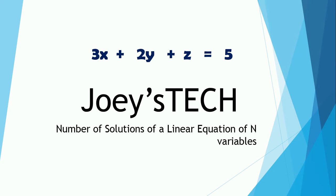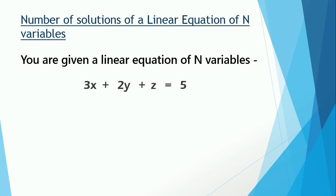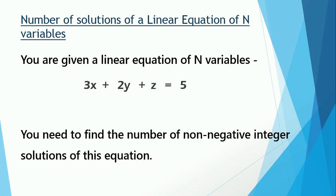Let's apply the dynamic programming technique to the concept of linear equations in mathematics. We are going to find the number of solutions of a linear equation of n variables. The problem statement is simple: you are given a linear equation of n variables — in our case n is 3 — and the right-hand side is 5. Find the total number of non-negative integer solutions of 3x + 2y + z = 5.